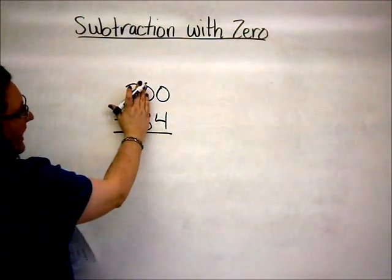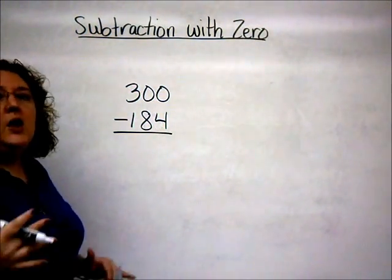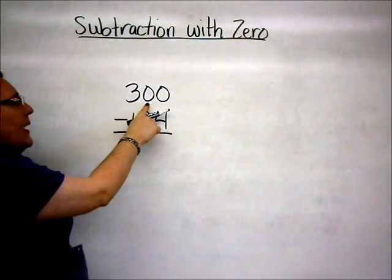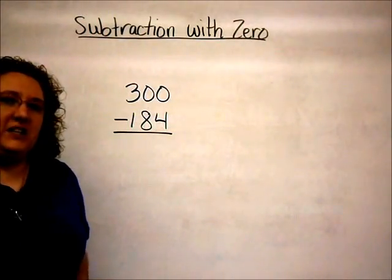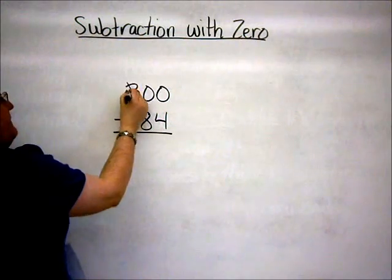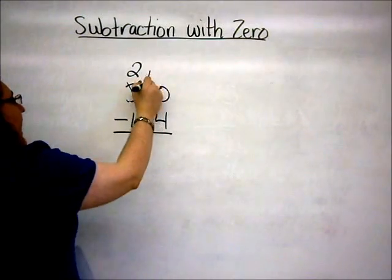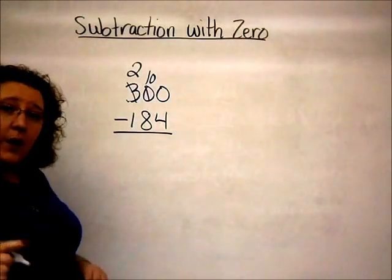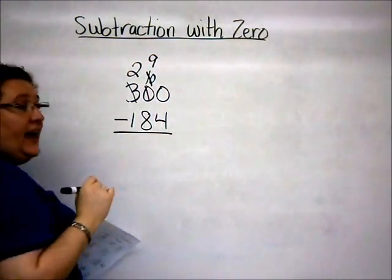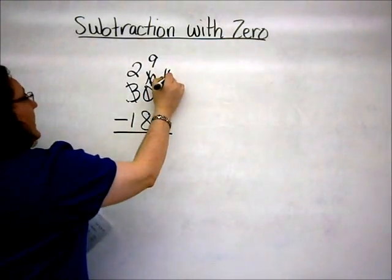Of course, when we subtract, we notice that we cannot borrow in the ones place because the bottom number is a bigger number. Normally, we would go next door to the next place, which of course is the tens, to borrow. But since it's a zero and we cannot borrow from a zero, we actually have to go over to another place. We borrow from the three and we regroup it into ten tens that we add to the zero. Now I can borrow in order to regroup the ones place. I take one from the tens and turn it into ten ones, which I add to the zero that's already there, and I end up with ten.